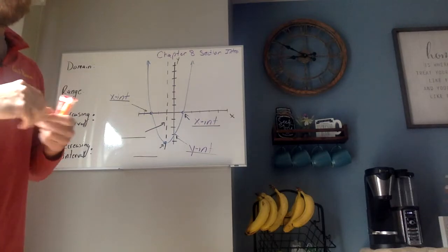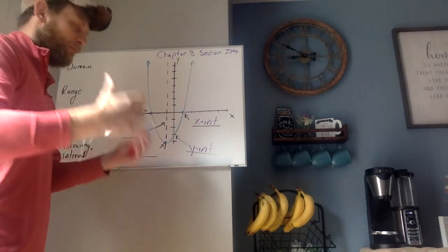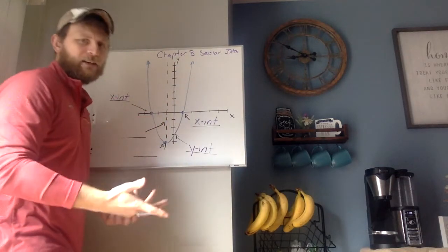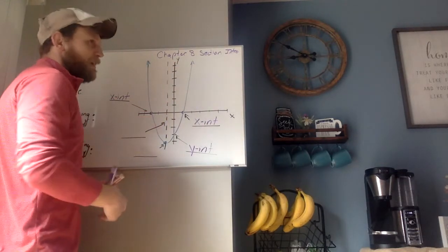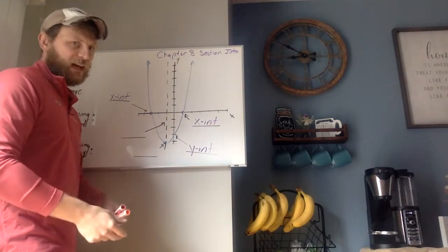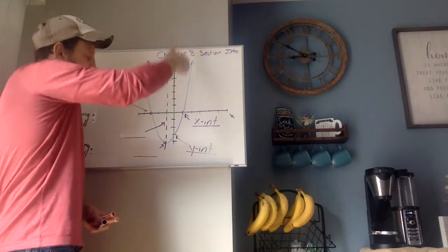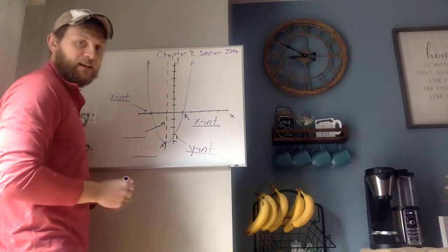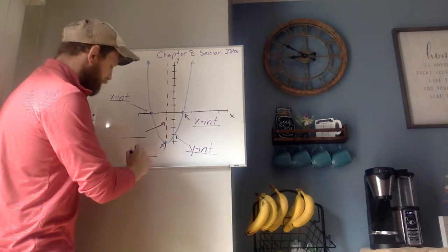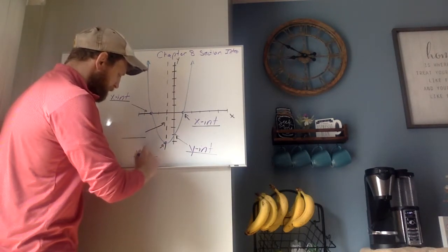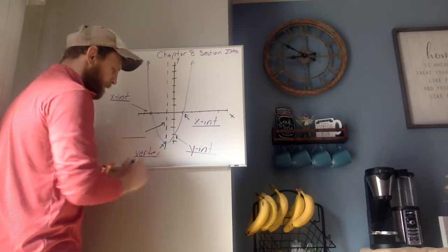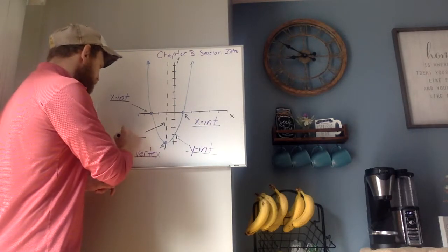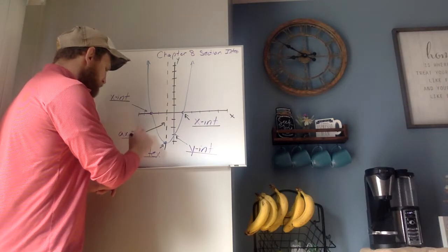For vertex, think of the letter V — it's that point at the V. Notice I kind of have a V shape here, more of a U shape, but V for vertex. Right there is the bottom of my V, so that is my vertex. That leaves us with the axis of symmetry.